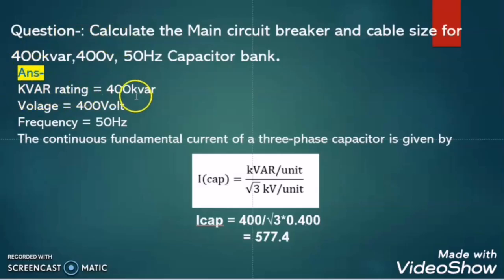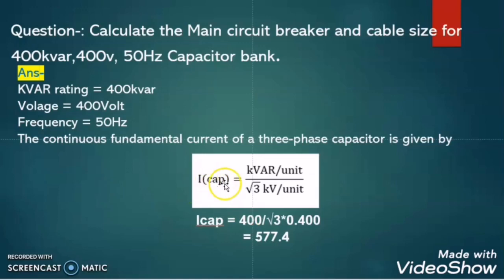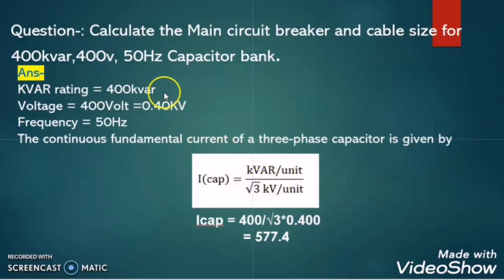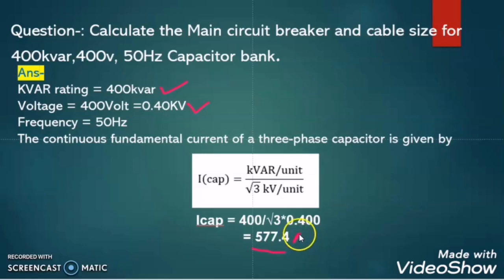I tabulated this information here: the kVAR rating is 400, voltage is 400V and the frequency is 50 Hz. The formula to calculate the current in a capacitor bank is: I = kVAR / (√3 × kV). Here the kVAR value is 400 and the voltage in kV is 0.40 kV. So substituting: 400 divided by (√3 × 0.400 kV), the result comes as 577.4 A.